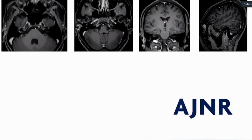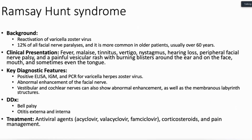This is Ramsay Hunt syndrome. Ramsay Hunt syndrome results from reactivation of the varicella-zoster virus, which can reside in sensory nerve ganglia from prior chickenpox infection. It is a cause of facial nerve paralysis; patients can present with tinnitus, vertigo, nystagmus, and hearing loss depending on nerve involvement. Diagnosis can be confirmed with PCR for VZV and MRI showing enhancement of the facial and vestibulocochlear nerves. Differential diagnosis includes Bell's palsy and otitis externa and interna. Treatment is with antiviral agents.